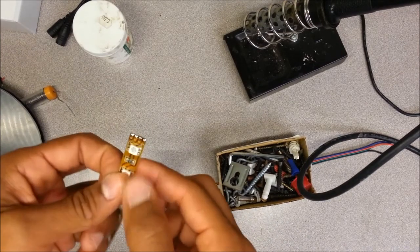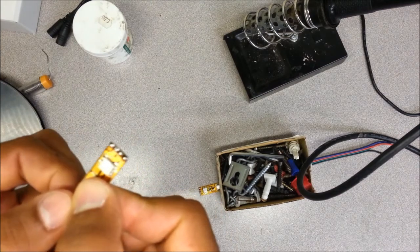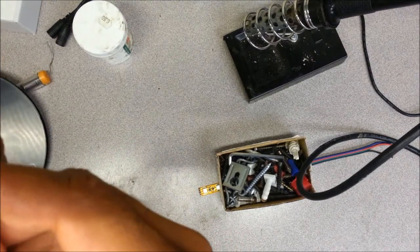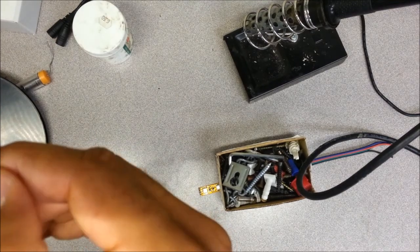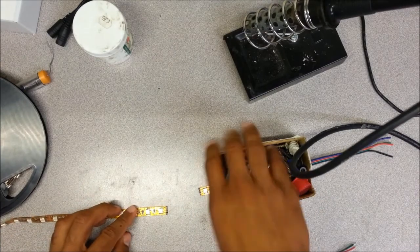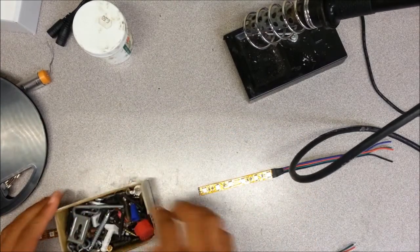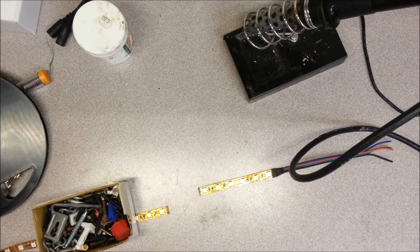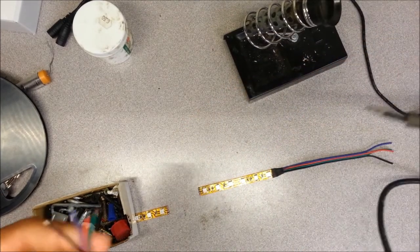So it probably won't show here in the camera that well, but at the point of each strip you can see that there is a 12 plus which is the power, green, red and blue. Same at the other side. So we're going to interconnect those together. I'm going to get my wire here, and I'm going to use black for power.